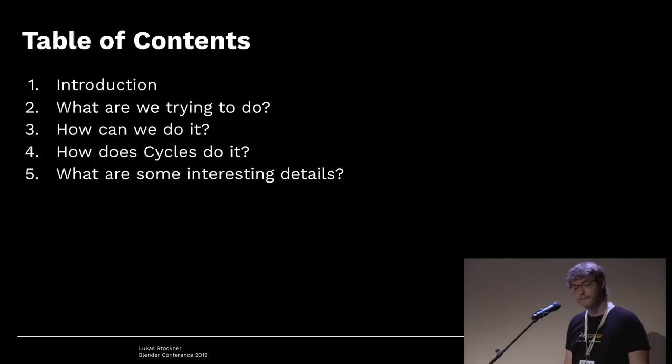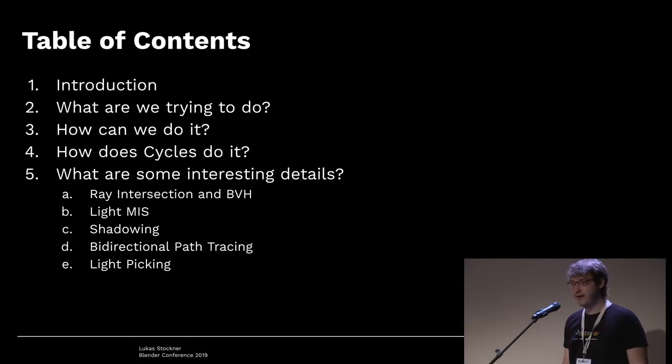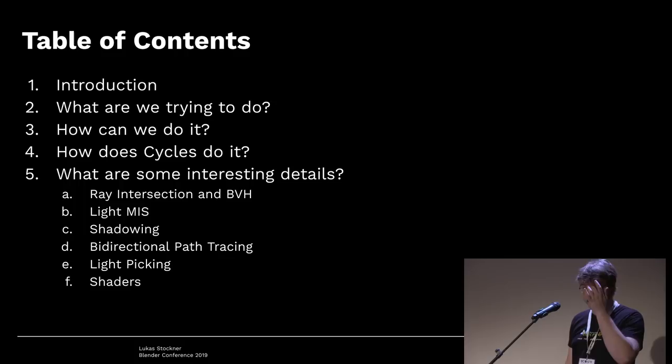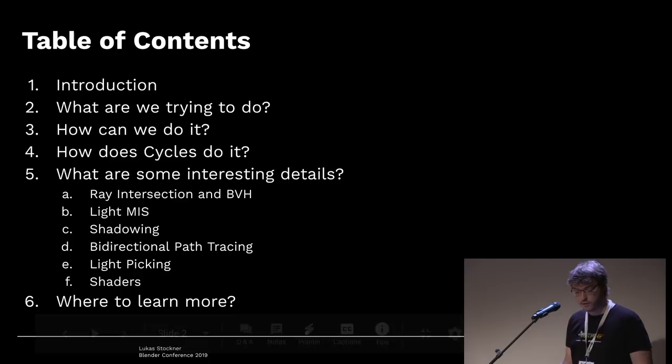Some of these topics include: how does ray intersection work, what is the BVH, what is multiple importance sampling, what does it have to do with lights, how does shadowing work, what is bidirectional path tracing and why does Cycles not do it, how does light picking work and why it doesn't work well right now, and finally shaders. 30 minutes is not enough to cover everything, so we'll also look at where to learn more.